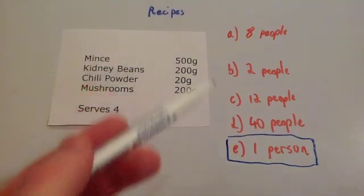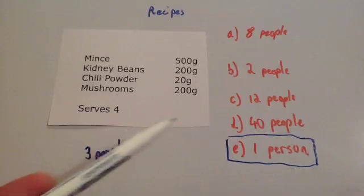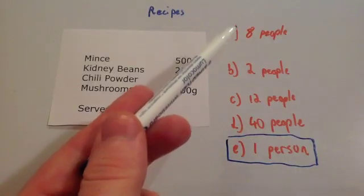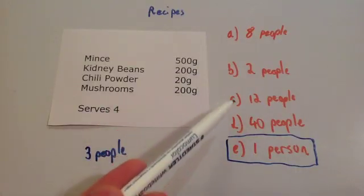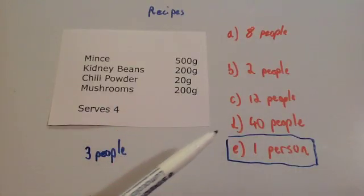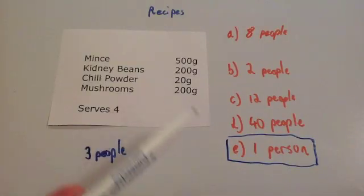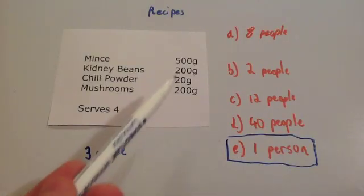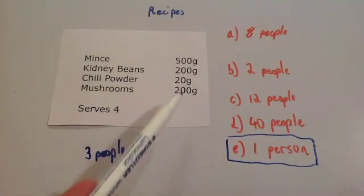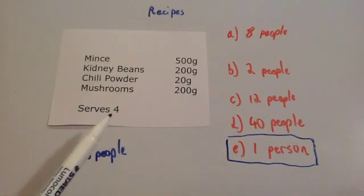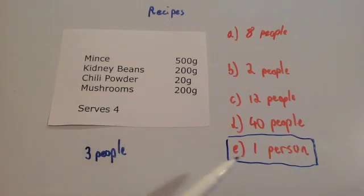So quite often whenever you're given a recipe, if it's not quite a nice straightforward easy one like this, what you could do — one other method — is to find out what it is for one person. So just divide all the ingredients by how many people it serves, and that gives you one person, and then just times by the number of people that you want it for.